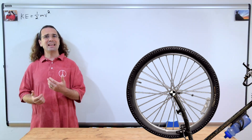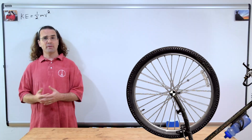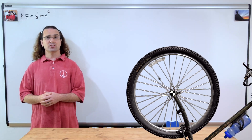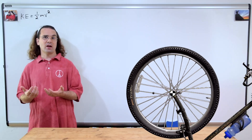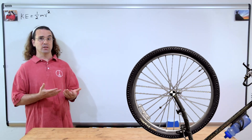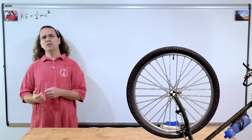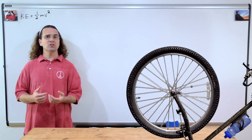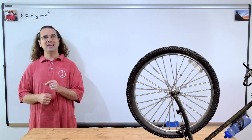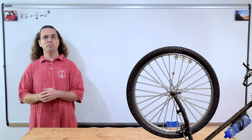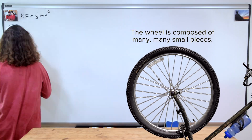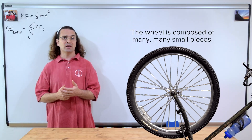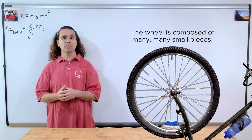I agree, Bobby. Kinetic energy is the energy of motion, so if an object is in motion, it should have kinetic energy. It is just that this equation does not describe the type of kinetic energy this wheel has. Rather than using center of mass to look at the wheel as a whole, we need to look at the kinetic energy of all the individual small pieces that make up the wheel. The total kinetic energy of the wheel equals the sum of the kinetic energies of all the small pieces that make up the wheel.